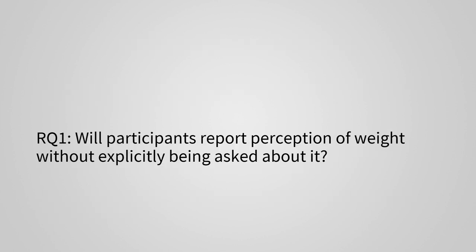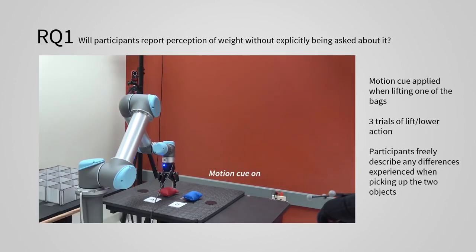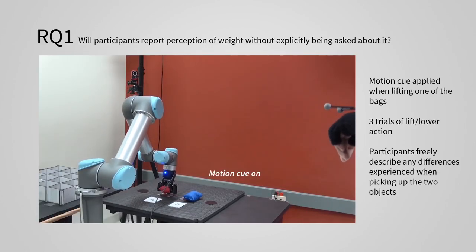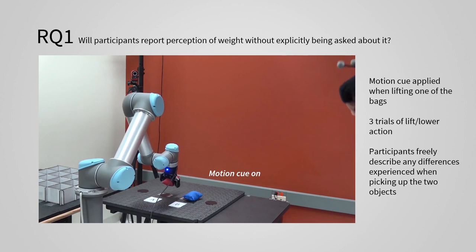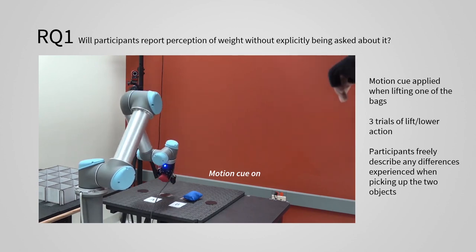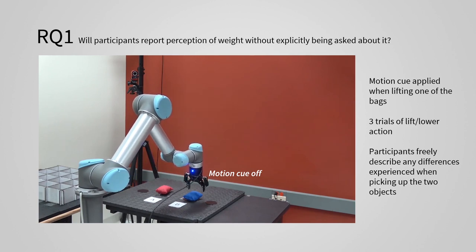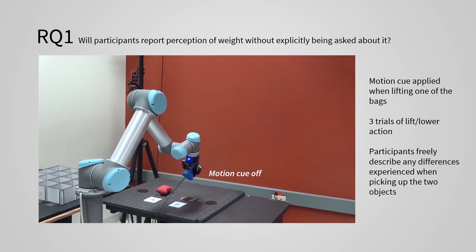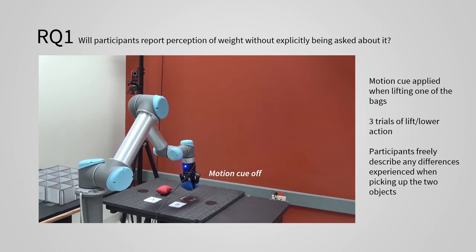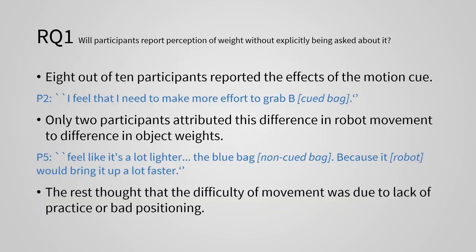Will participants report perception of weight without explicitly being asked about it? To test this, in our first task, participants lifted two bean bags with identical weights. One of the bags we simulated to be heavier with our motion cue for weight. Participants repeated this lifting three times and freely described any differences they experienced when picking up the two objects.